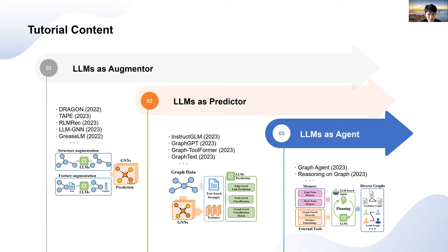The second one is large language models as predictors. Here, large language models are directly utilized to generate prediction results. This involves carefully designing inputs, such as using prompts or specialized graph tokens to guide large language models in producing accurate predictions. This approach harnesses the language generation capabilities of large language models to directly address graph-related tasks.